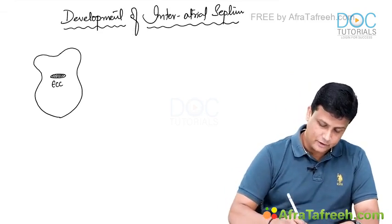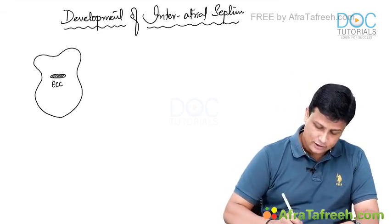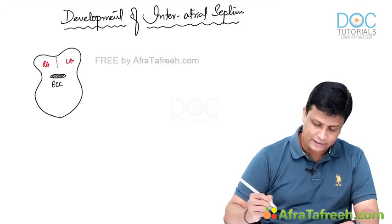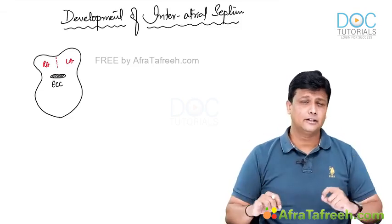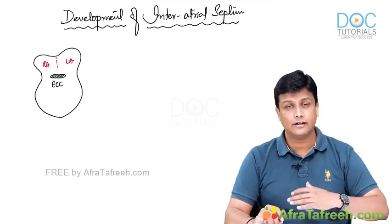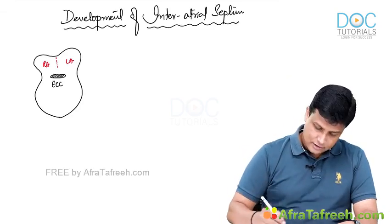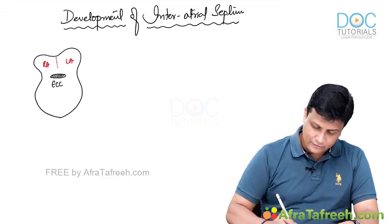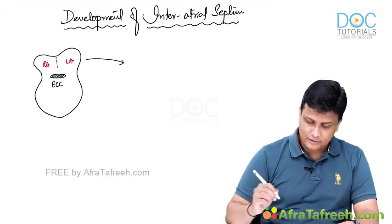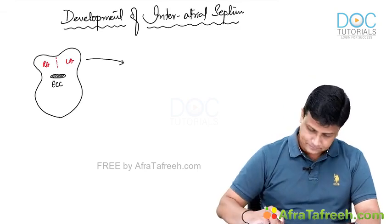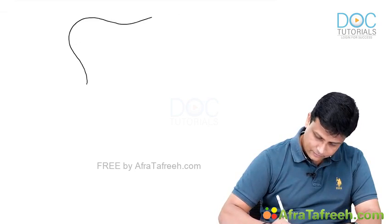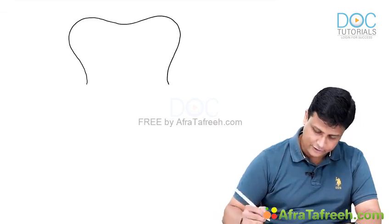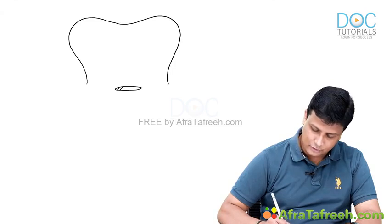Our topic is about the inter-atrial septum. So if this is your right atrium and this is the left atrium, in the middle there will be formation of the inter-atrial septum. Let us draw a separate diagram considering only the right atrium and the left atrium. Imagine this to be your right atrium and this to be the left atrium, with the endocardial cushion over here.